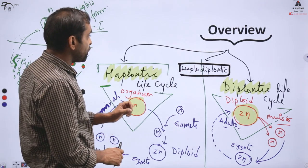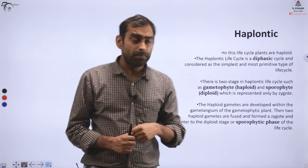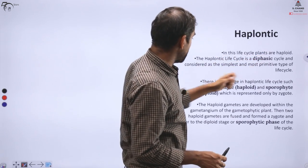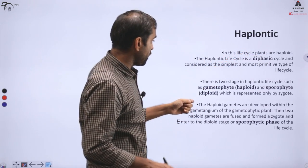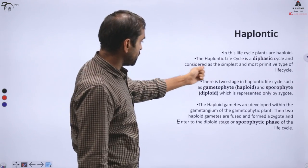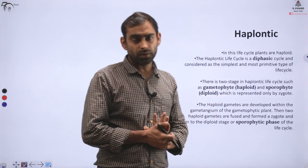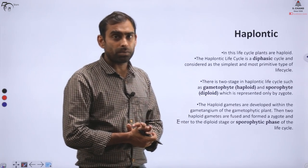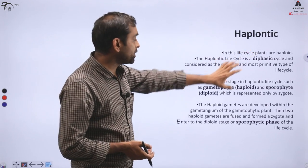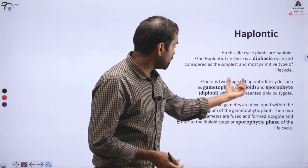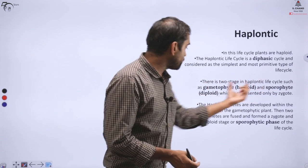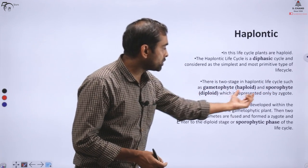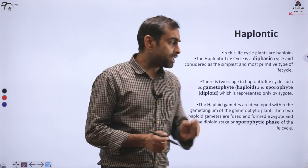Haplontic life cycle means organisms are mostly haploid. In this life cycle, plants are haploid. It's a diphasic life cycle and considered the simplest and most primitive type, because early organisms from evolutionary point of view had this. It's a primitive type of phase. There are two stages in haplontic life cycle, such as gametophyte. Gametophyte is haploid, and sporophyte is diploid, represented by the zygote.